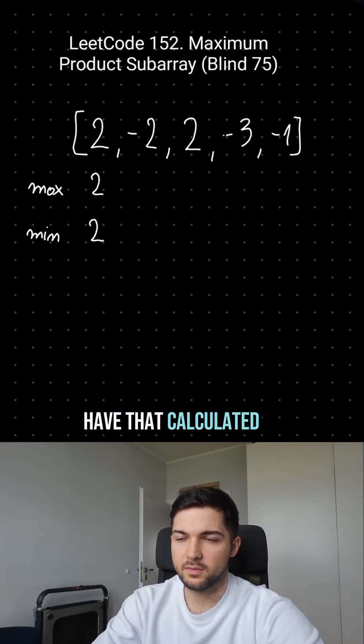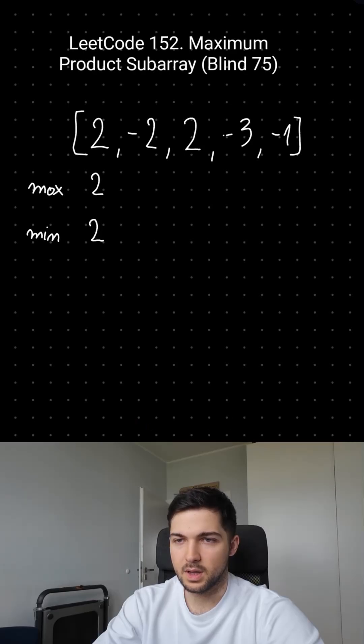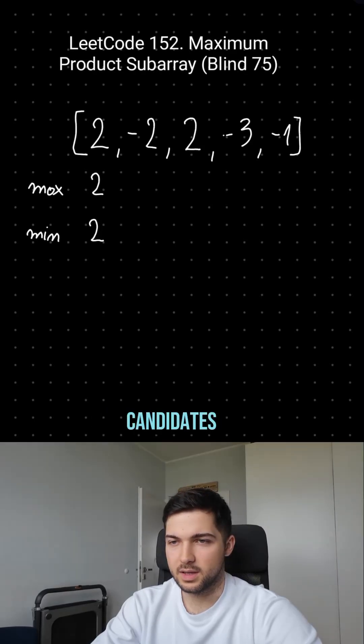Let's assume we have that calculated for some first few elements. How do we calculate the next ones? We have two candidates.